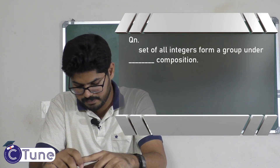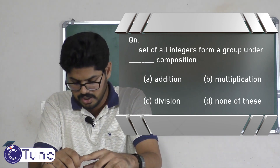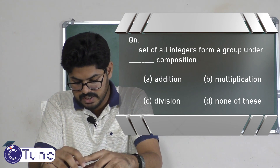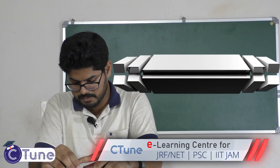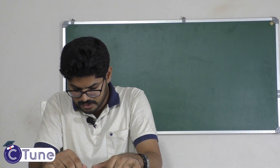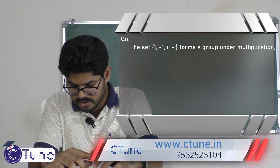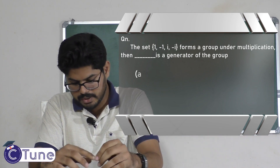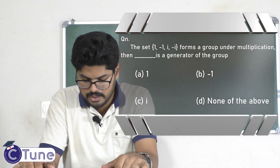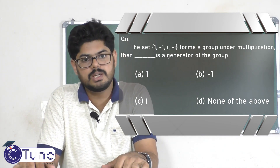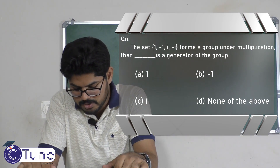The set of all integers forms a group under addition. The set {1, -1, i, -i} forms a group under multiplication — this is a cyclic group of order 4, representing the fourth roots of unity. The generator of this group is i, so option C is the correct answer.